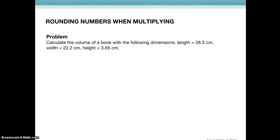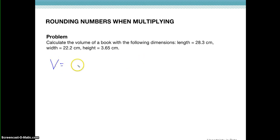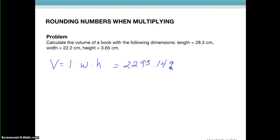Let's look at this last example for sig figs, and then we will talk about scientific notation. In this example, we're going to be multiplying, so we're going to have to use our rules for multiplying. It says to calculate the volume of a book with the following dimensions, giving us the length, the width, and the height. To find the volume, we multiply length times width times height, which gives us in the calculator a number that looks like 2293.149. That's a lot of sig figs, and if we look at our three numbers that we used, they all have three sig figs.